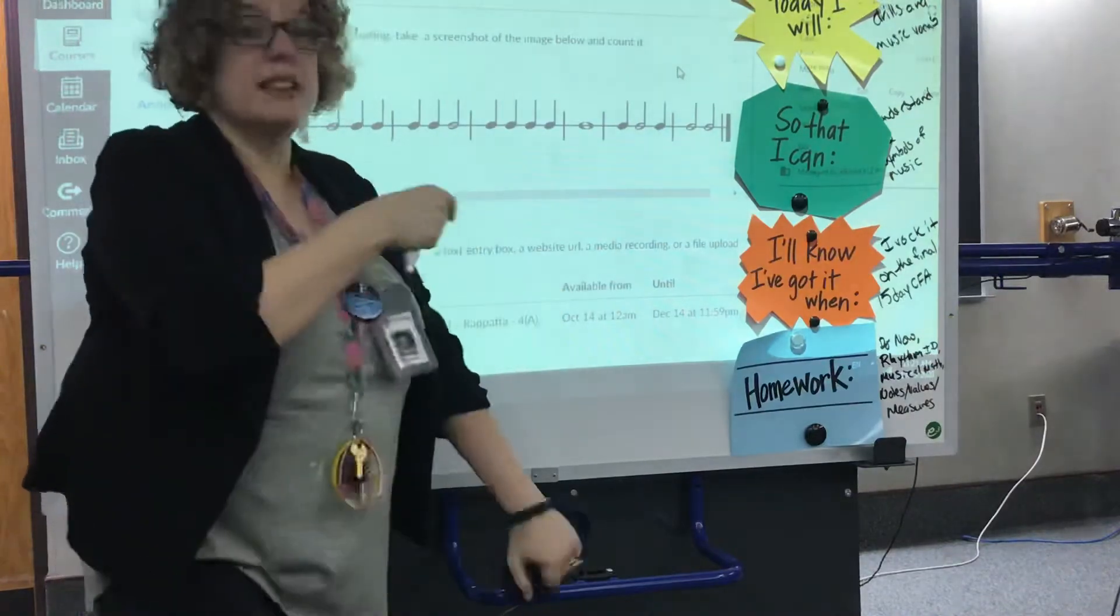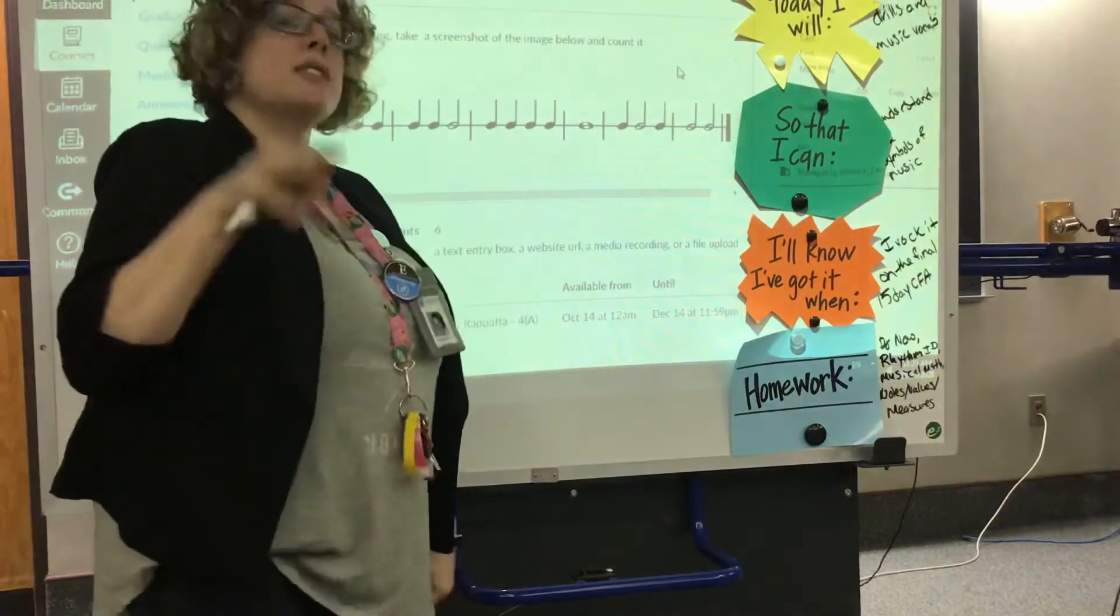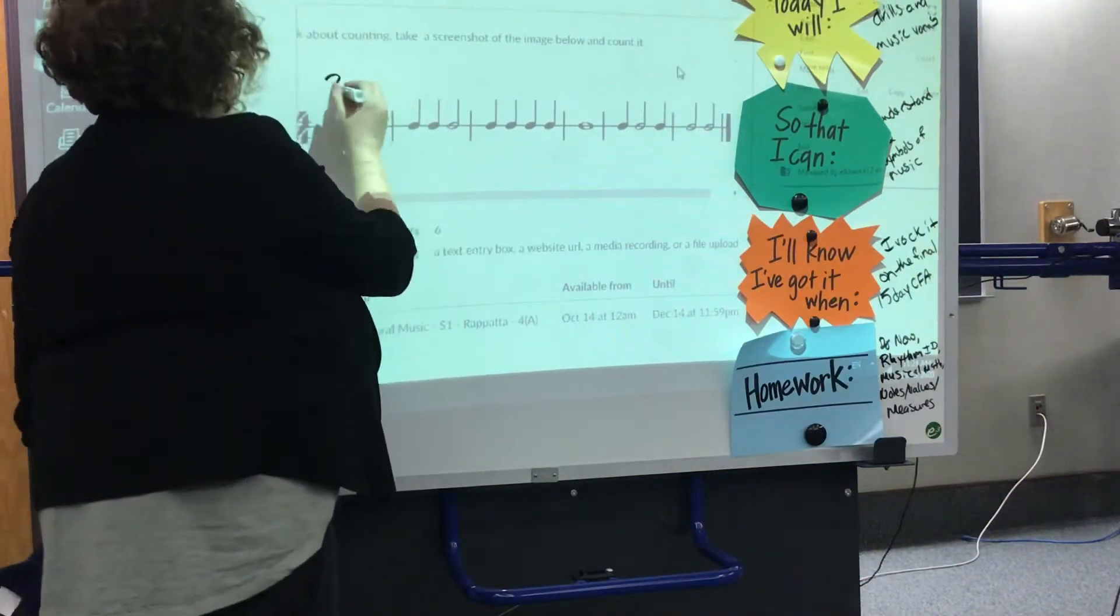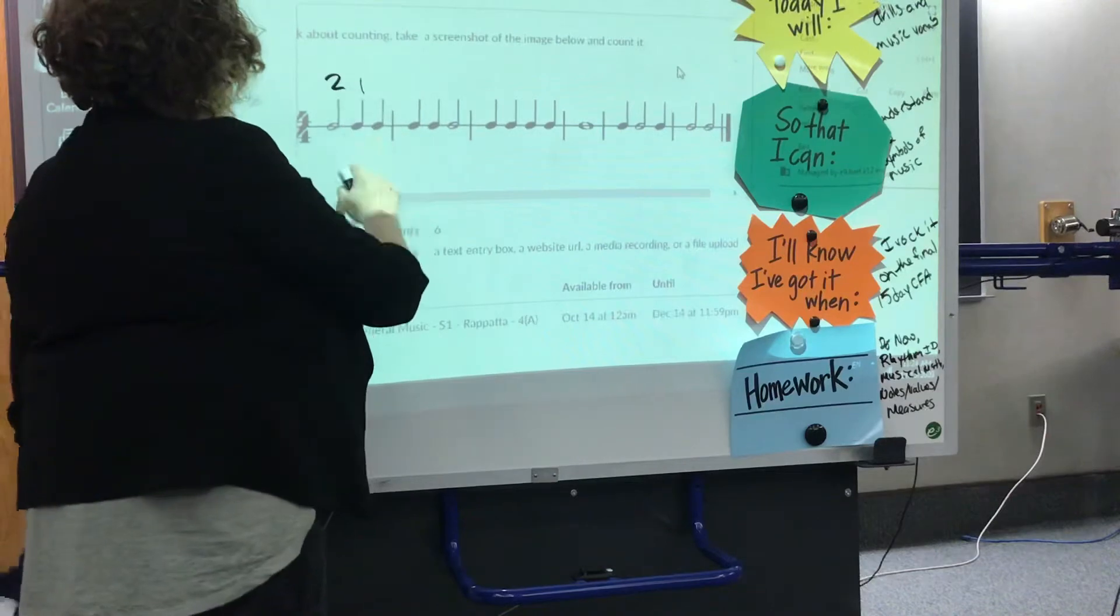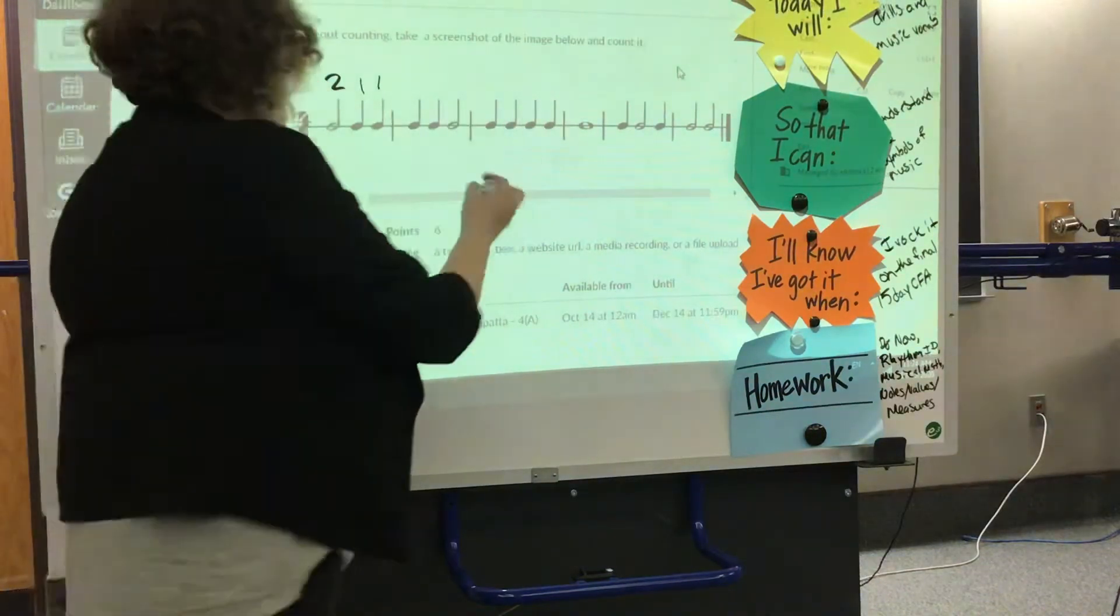So first of all, I'm going to write in the value, so how many beats each note gets. I'm going to write that above it so it can help me in the future. So I know this is a half note, it gets two beats. And this is a quarter, it gets one, and this is a quarter, it gets one. I'm going to take a moment and write in the value for the rest of them.